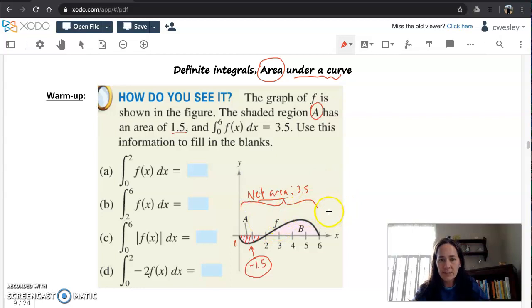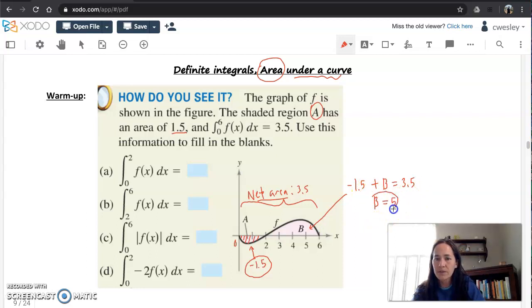That should be the missing link to find this region here. We gotta figure out negative 1.5 plus what value, we gotta find B, is gonna equal a net area of 3.5. And that's pretty simple enough to add the 1.5 over and get that B is gonna be positive five units. If we add these two values, you get your net area of 3.5.